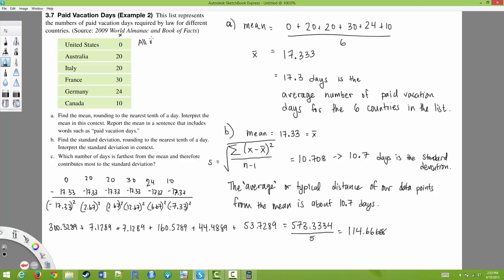So all of our data points are different, or different from the mean. So that's the average deviation of 17.33. But the typical distance difference is about 10.7. And so that's another interpretation for the standard deviation.